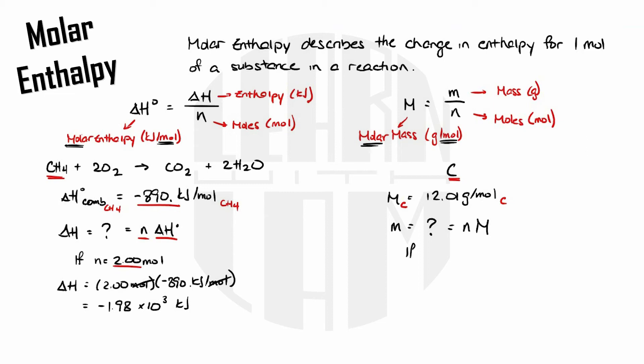Similarly if we have 2.00 moles of carbon then mass equals 2.00 moles times 12.01 grams per mole. Cancel out the units which gives me 24.02 grams. It's the same thing.